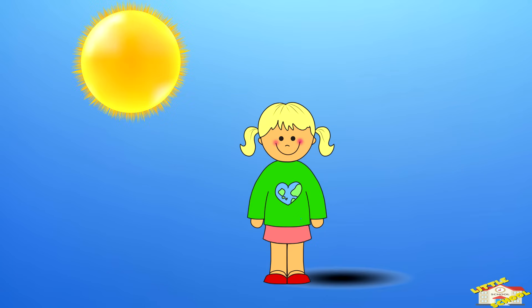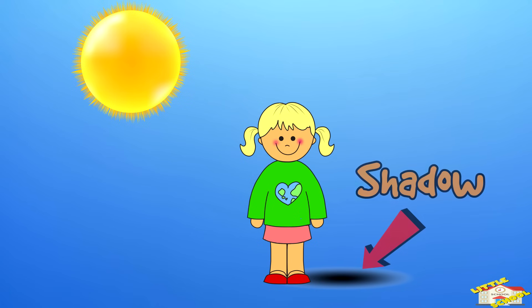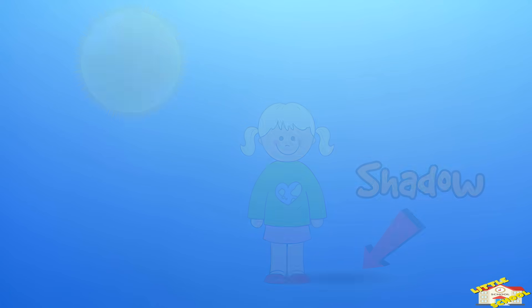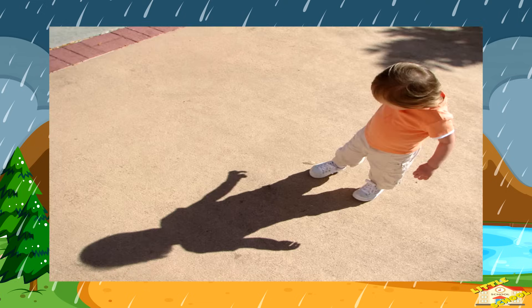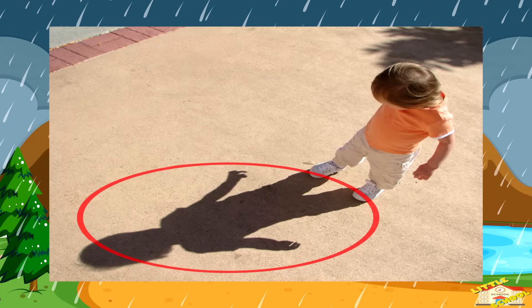If you stand in the sunlight, you'll notice a dark shape behind you on the ground — that's your shadow. It's the shape of your body because your body is blocking the sunlight from hitting the ground.